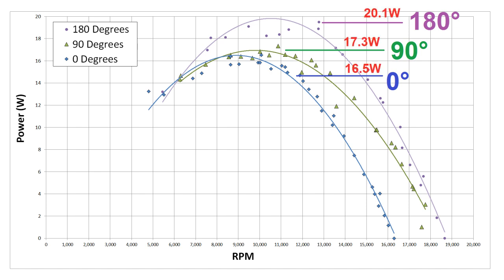The straight flow casing topped out at 16.5 watts, which is almost 20% less than the 180 degree flow at 20.1 watts. The 90 degree flow casing wasn't much better, topping out at just 17.3 watts.